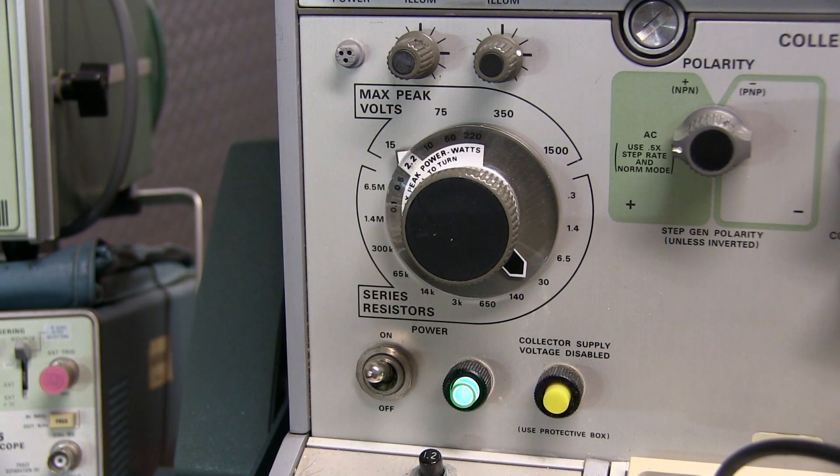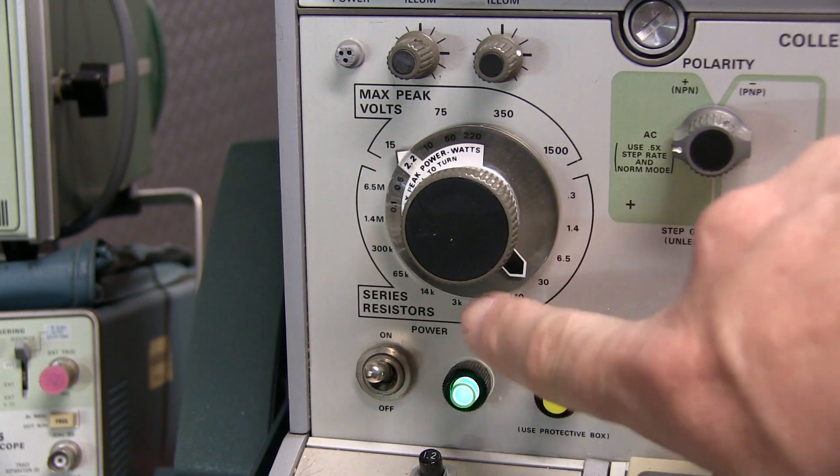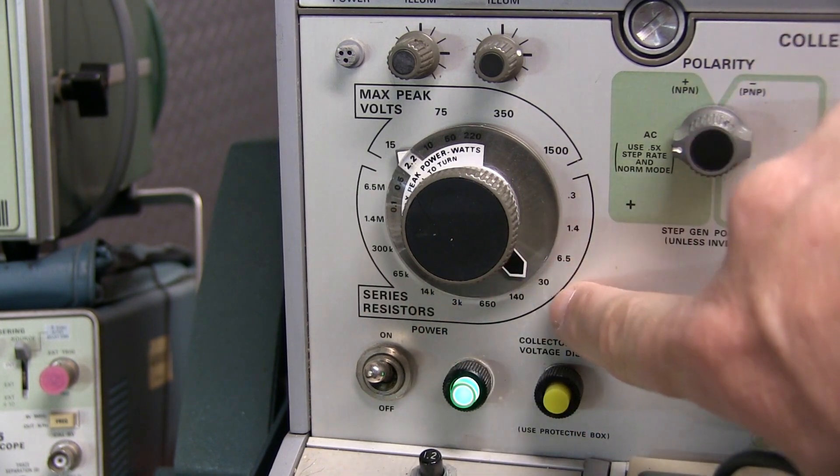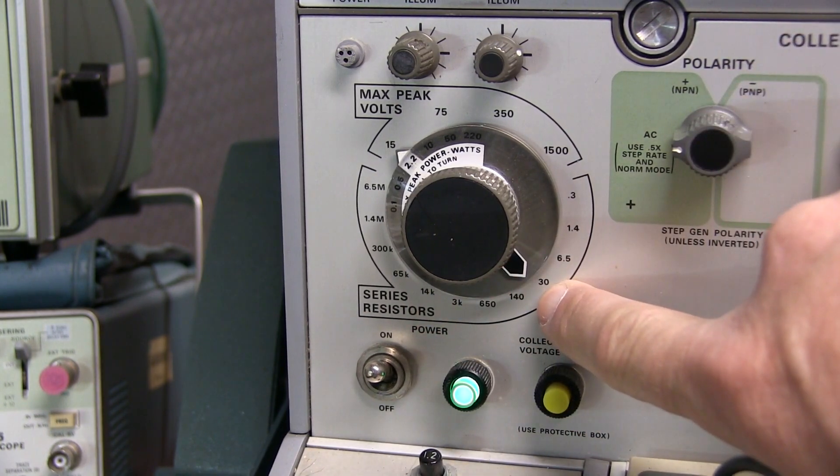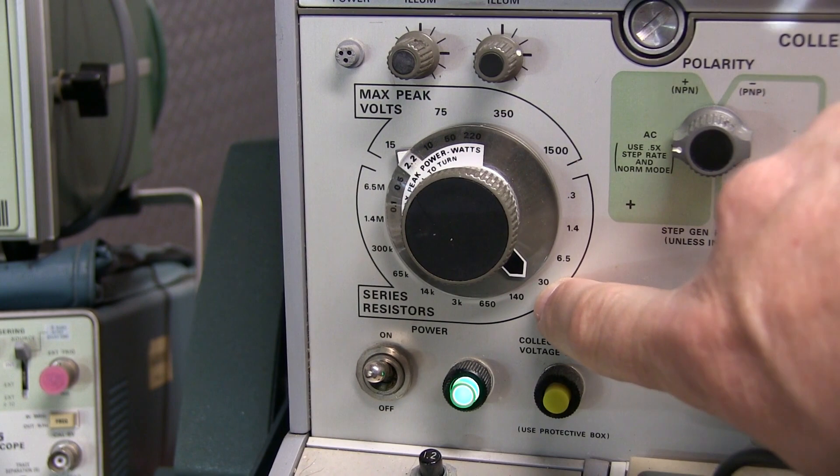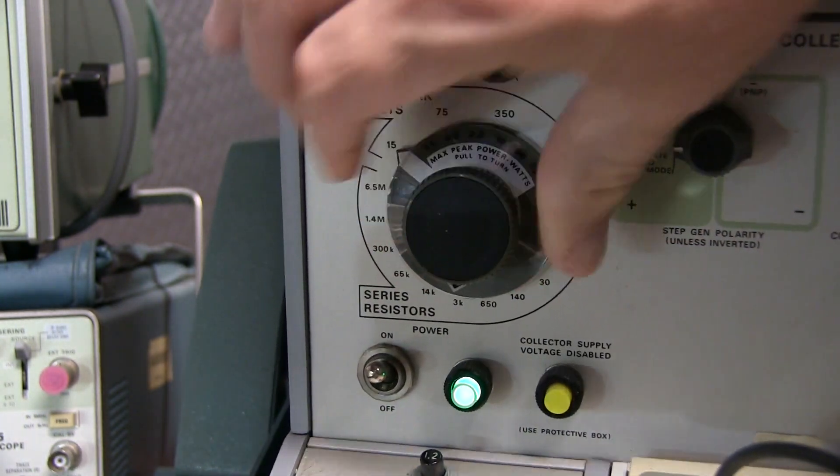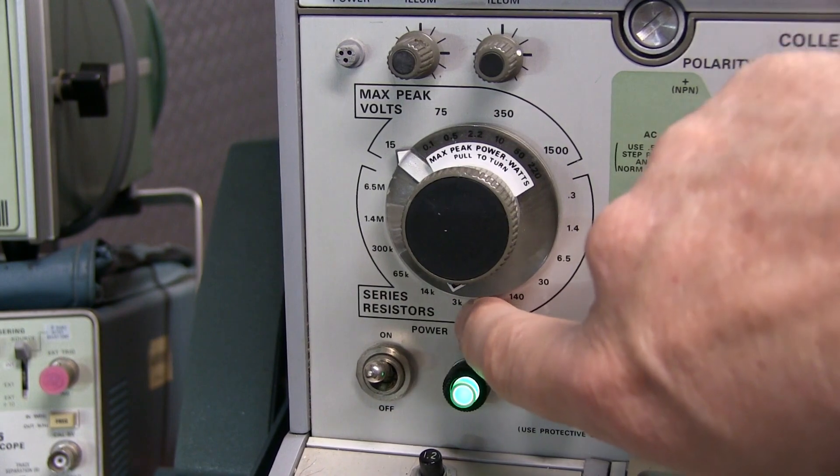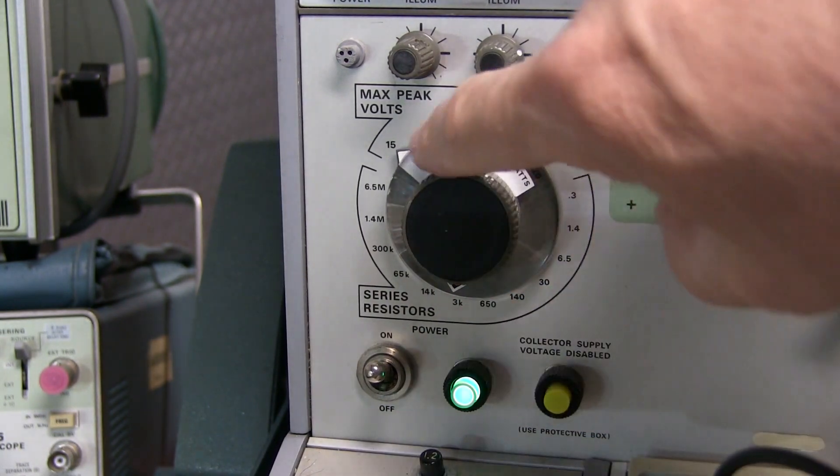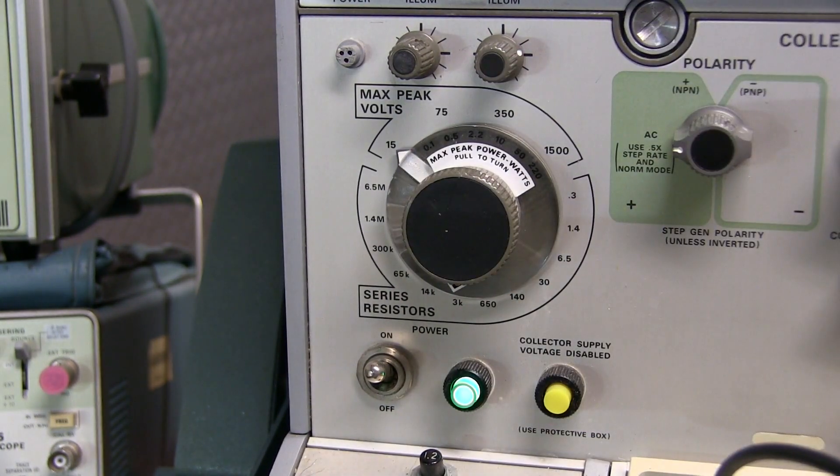Now both the tracker and the octopus have a resistor in series with the device under test to limit the current. And that's set on this curve tracer with this dial down below. We can see right now it's set to 30 ohm series resistance. I'm going to set it to something much larger like 3k. So we simply pull that knob and turn it over to 3k. So that'll put a 3000 ohm resistor in series with the 15 volt AC adjustable source that we're going to apply to our device via the terminals.